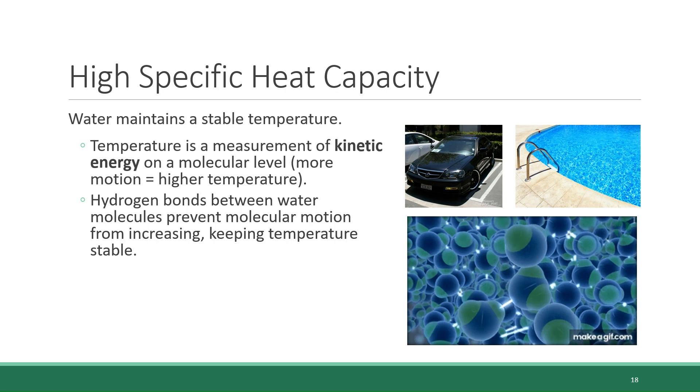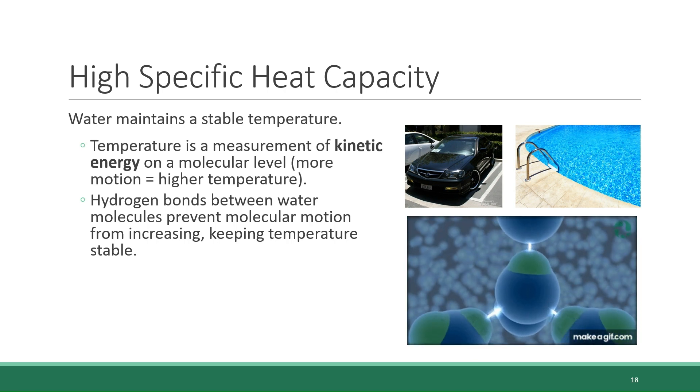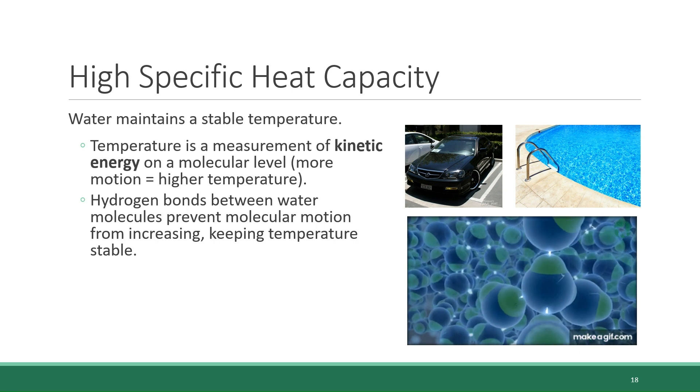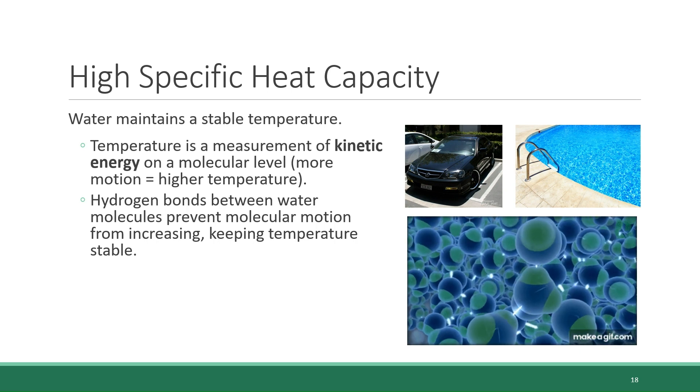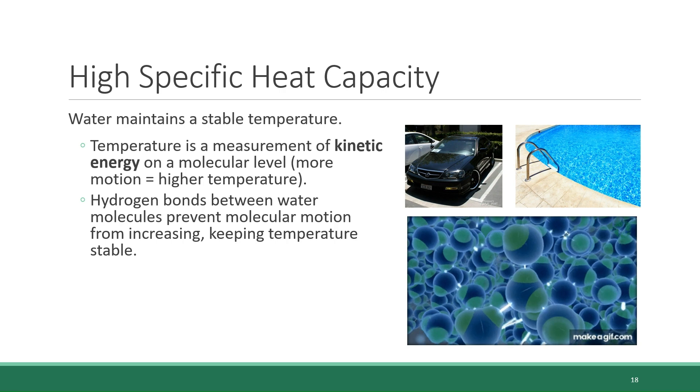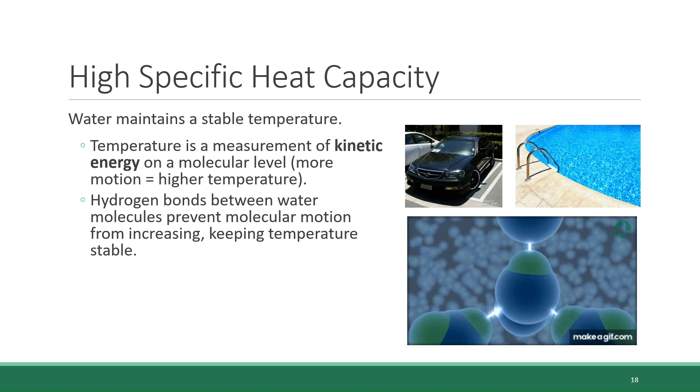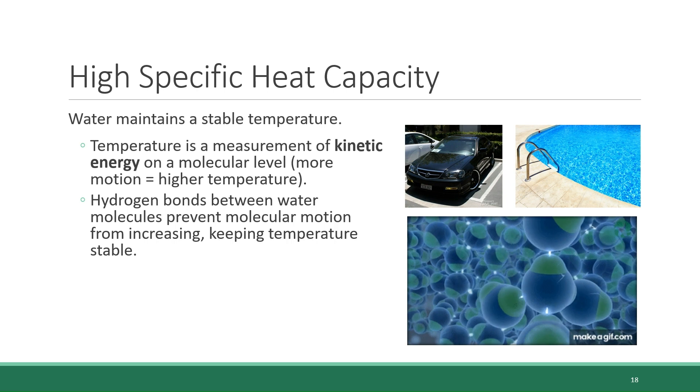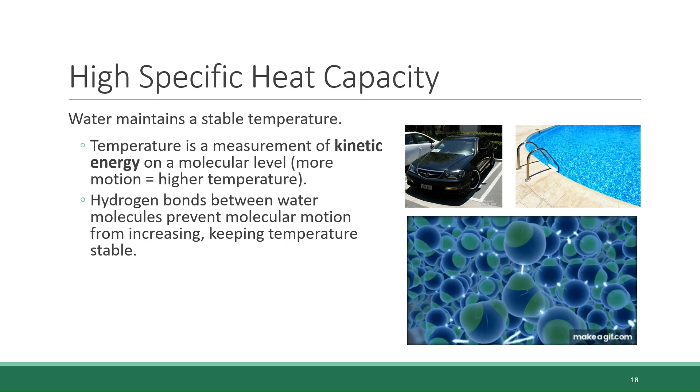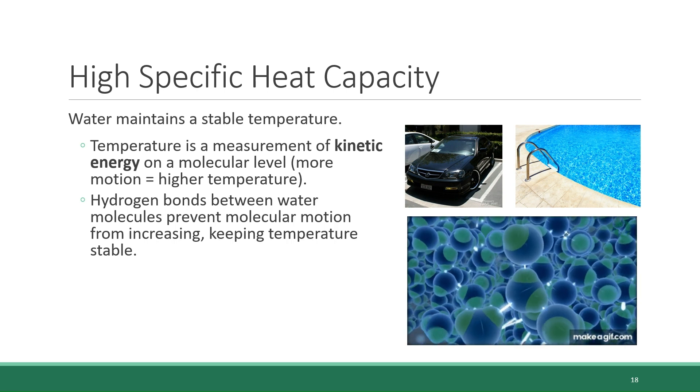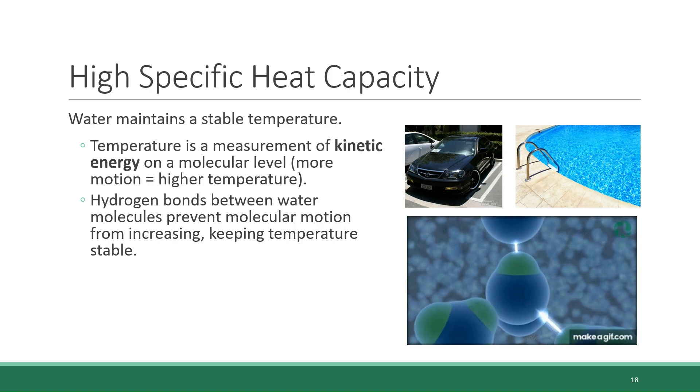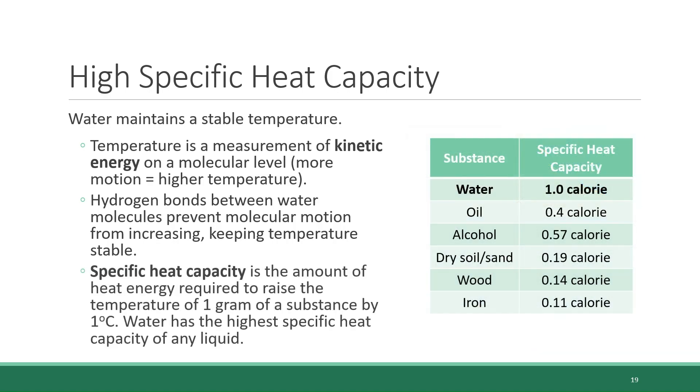In the case of water, the network of hydrogen bonds between the molecules keeps them stable and steady and prevents them from moving even when exposed to high amounts of heat. Therefore, the temperature of the water remains relatively stable because its molecules stick together and resist increases in their movement. The temperature stability of a substance is wrapped up in a measurement we call specific heat capacity. Specific heat capacity is the amount of heat energy required to raise the temperature of one gram of a substance by one degree Celsius.